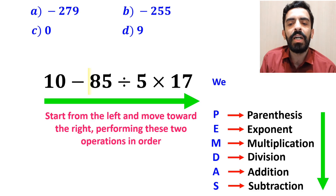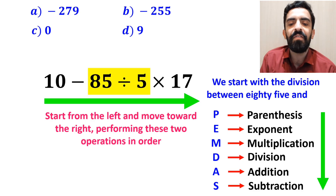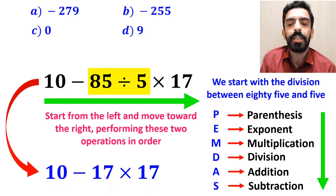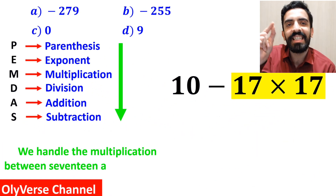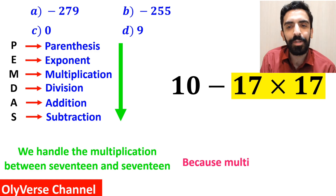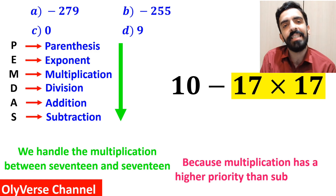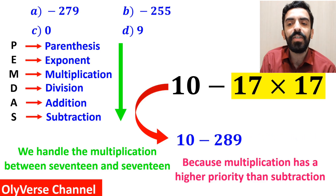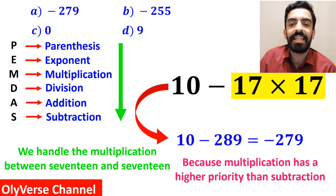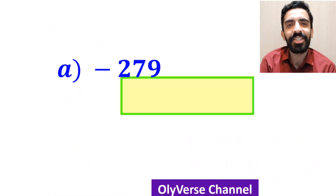First we start with the division between 85 and 5, which simplifies the expression to 10 minus 17 multiplied by 17. Next we handle the multiplication between 17 and 17, because multiplication has higher priority than subtraction. This simplifies to 10 minus 289, which ultimately gives us the answer negative 279. Option A is the correct answer to this question.